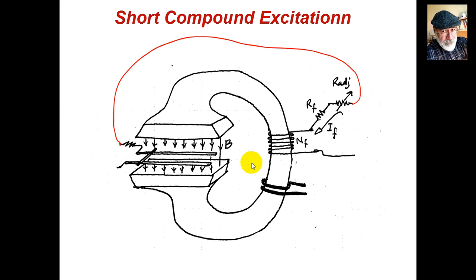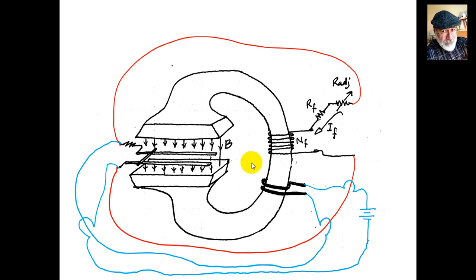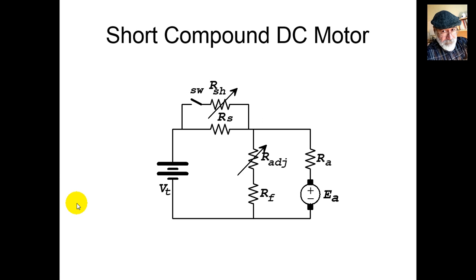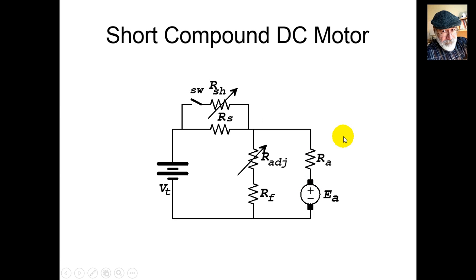In short compound, we connect the field coil in parallel with the armature — in shunt — and then take the series coil and connect it directly to the positive of the battery, continuing from the series coil into the armature. In short compound the field coil is very close to the armature; in long compound the field coil is far from the armature. Those are the names: short compound and long compound.